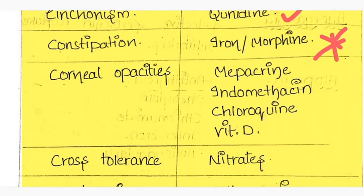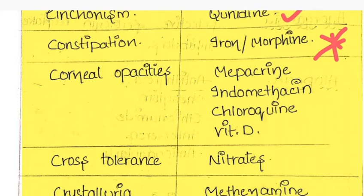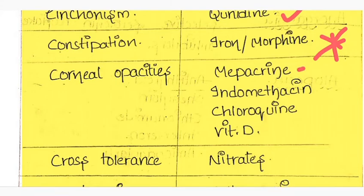Corneal opacity is caused by mepacrine, indomethacin, chloroquine, and vitamin D.